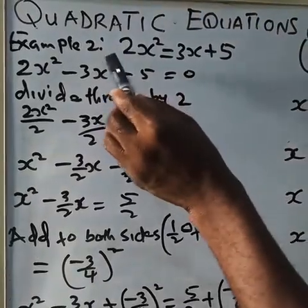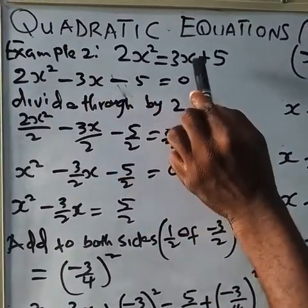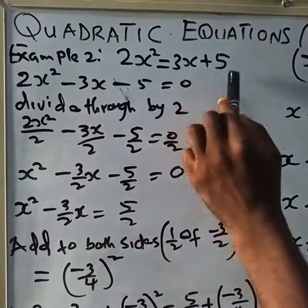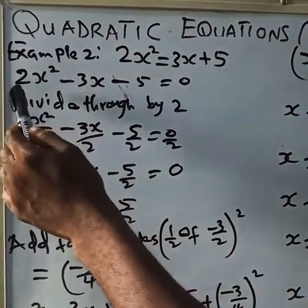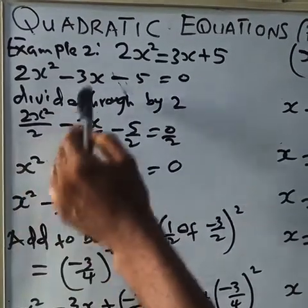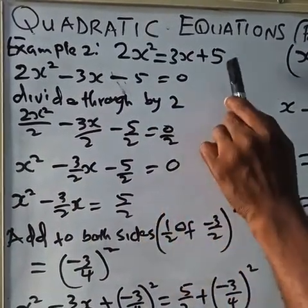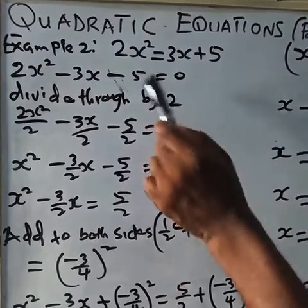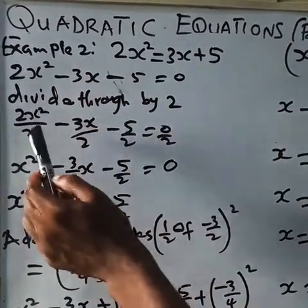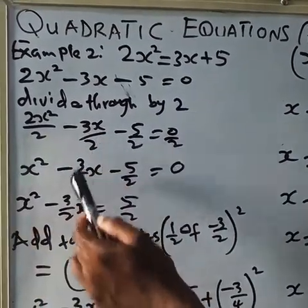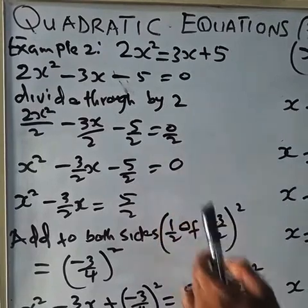Example 2: rearrange the quadratic equation to get 2x squared minus 3x minus 5 equals zero. Step 1: divide through by 2. We get x squared minus 3x over 2 minus 5 over 2 equals zero.